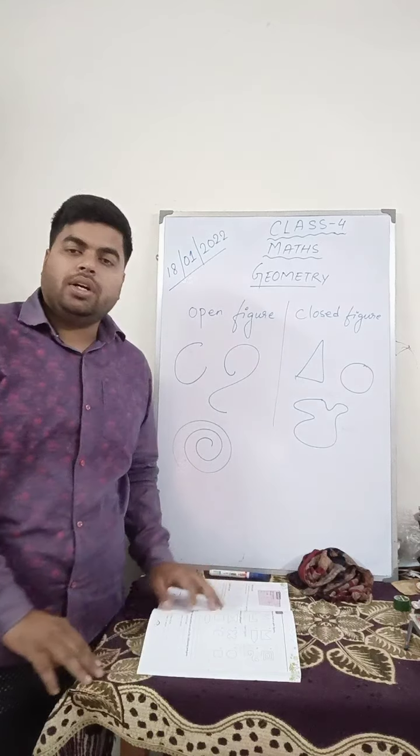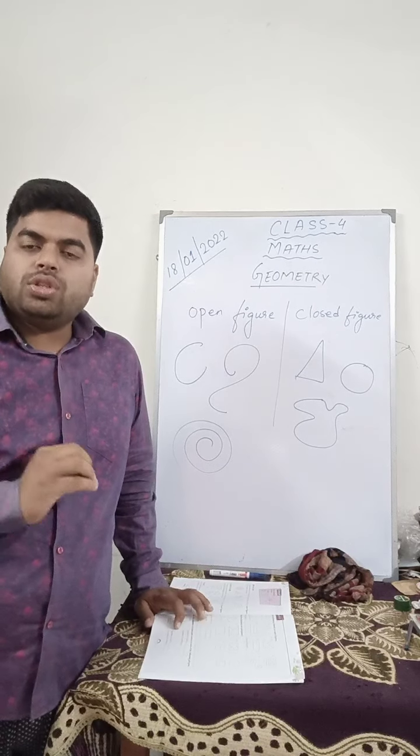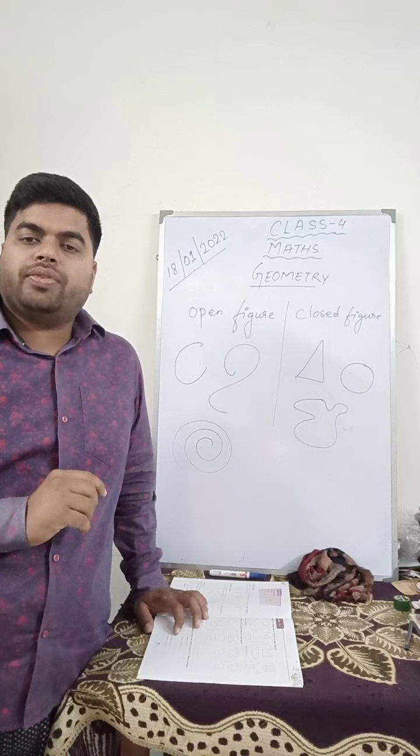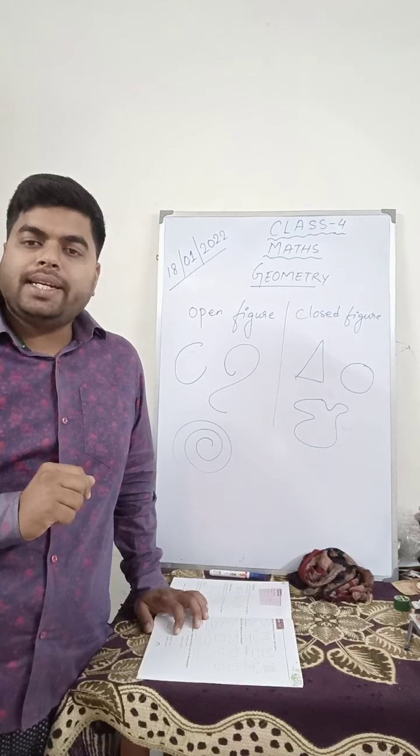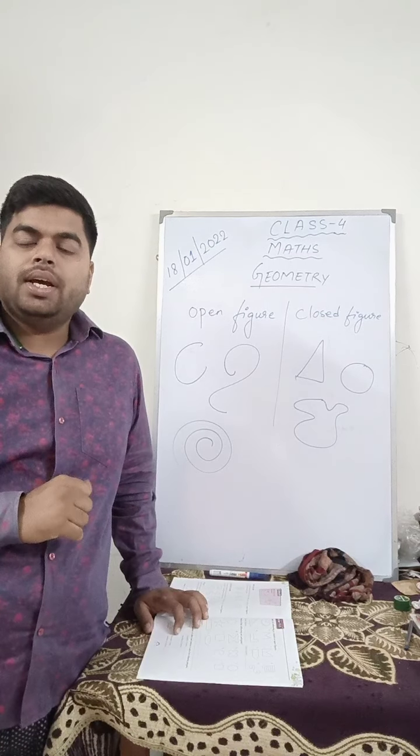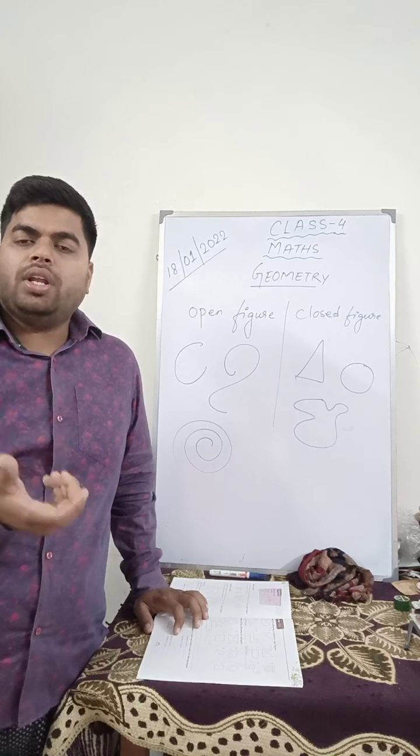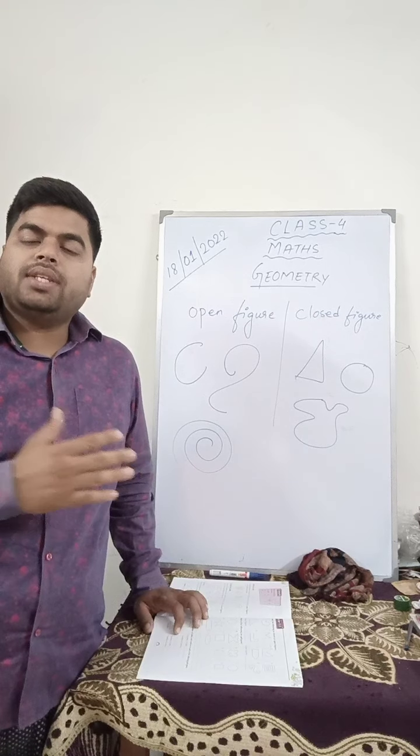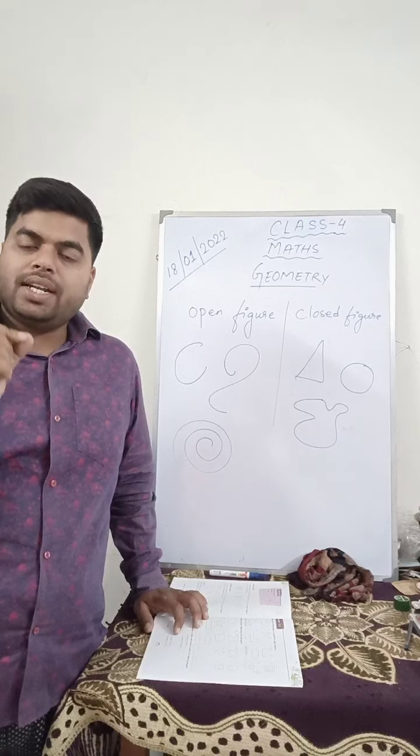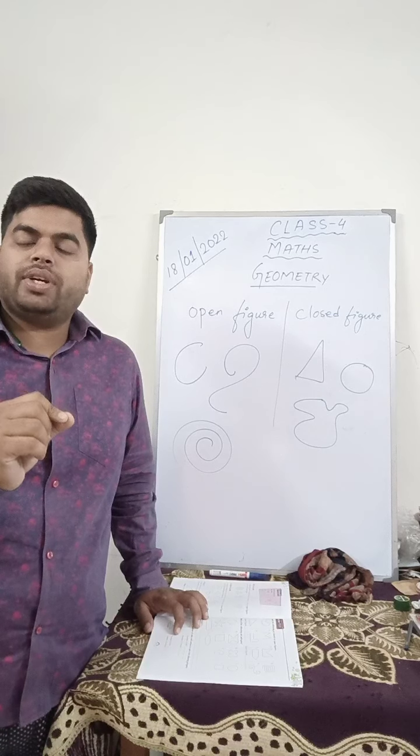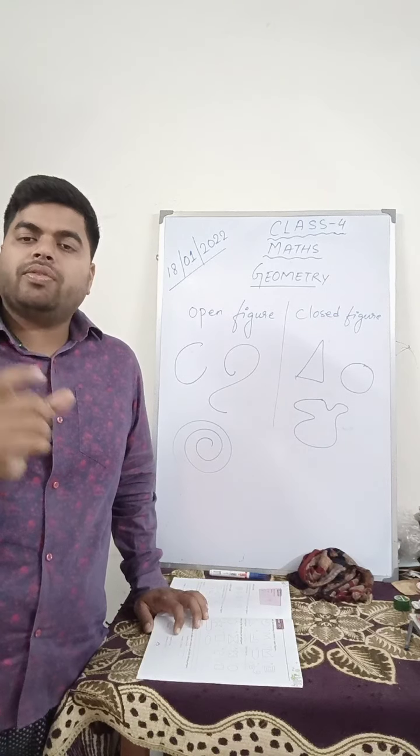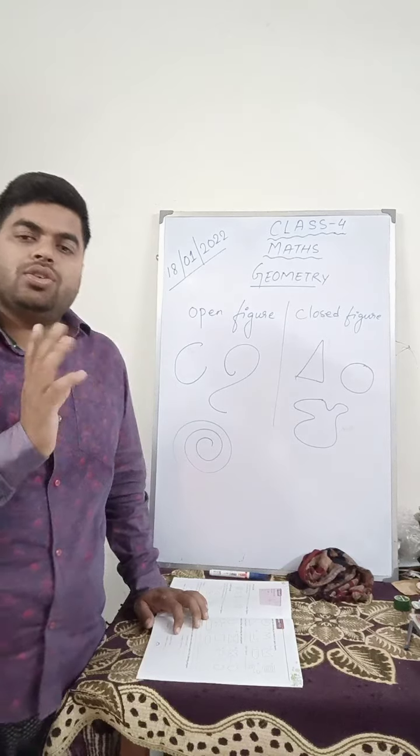Next is the polygon. Polygons are those figures, those simple closed figures which are made of line segments, that means fixed measurement. Like for example triangle, quadrilateral, pentagon, hexagon, no matter how many sides it has, but if it is a simple closed figure and the measurement of the length are fixed, it is known as polygon.